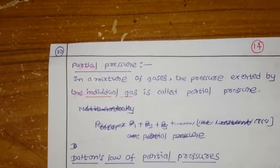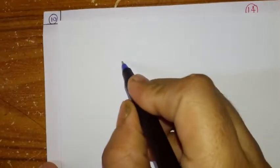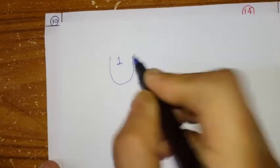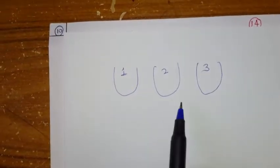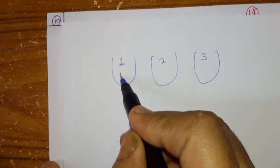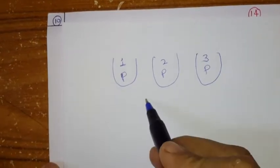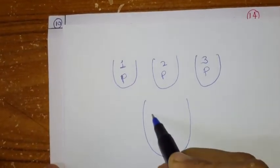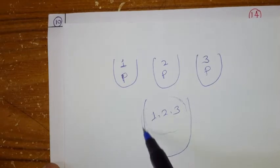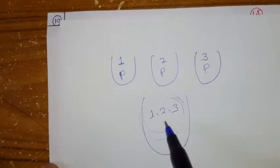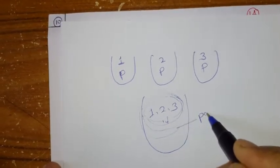What does that mean? You are talking about the pressure in a mixture of gases. For example, I have a first gas and second gas in one vessel, and a second and third gas in another vessel. Each gas exerts some pressure — P, P, P.